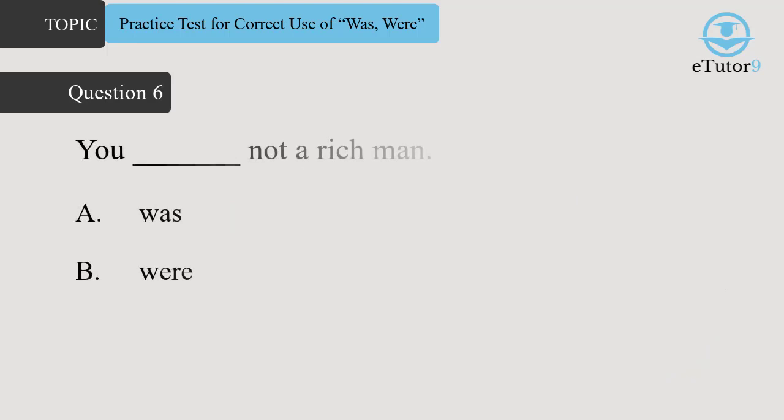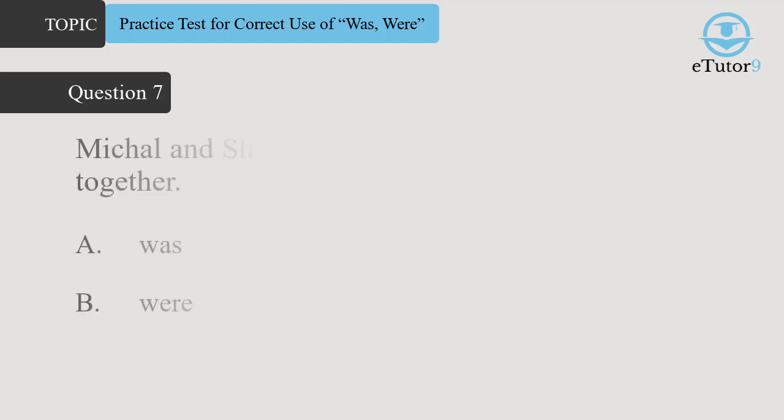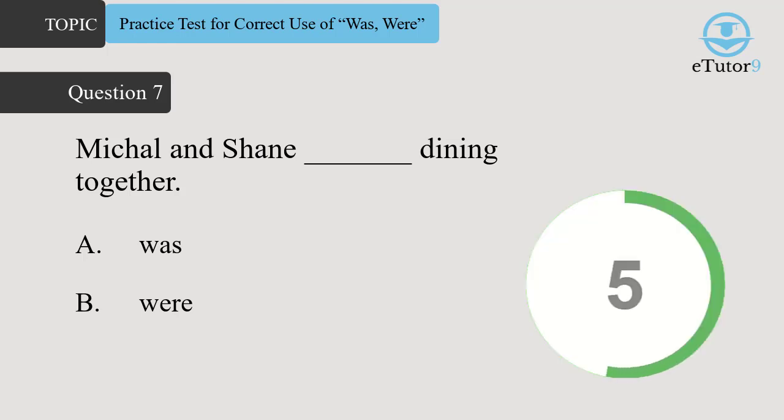Question 6. You dash not a rich man. Answer is B. Were. Question 7. Michael and Shane dash dining together. Answer is B. Were.